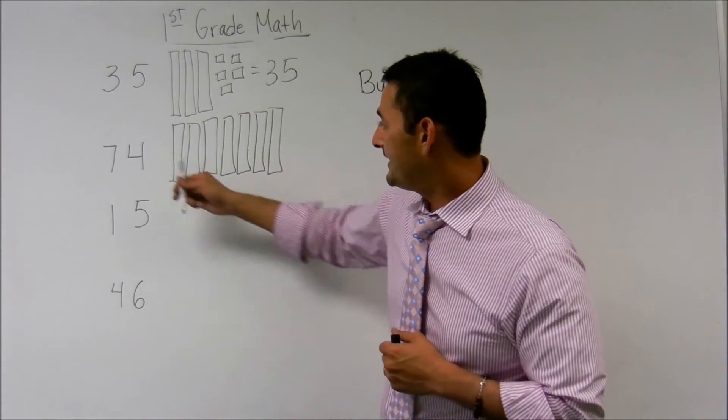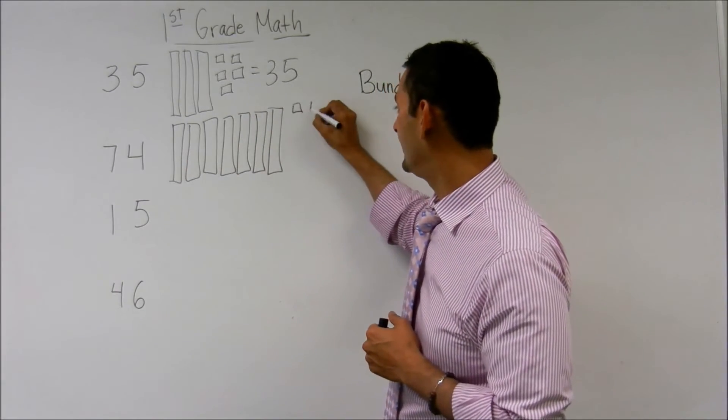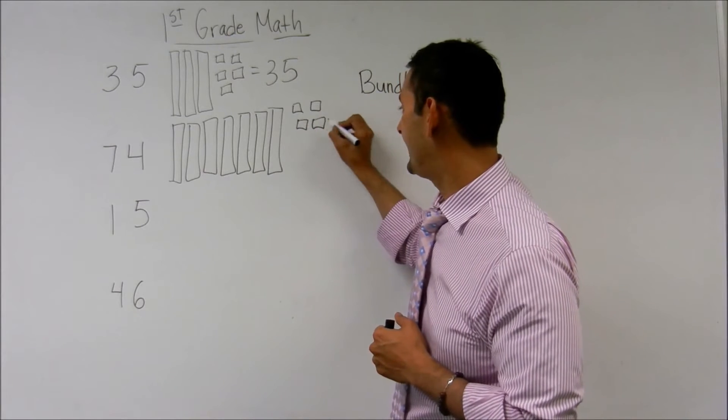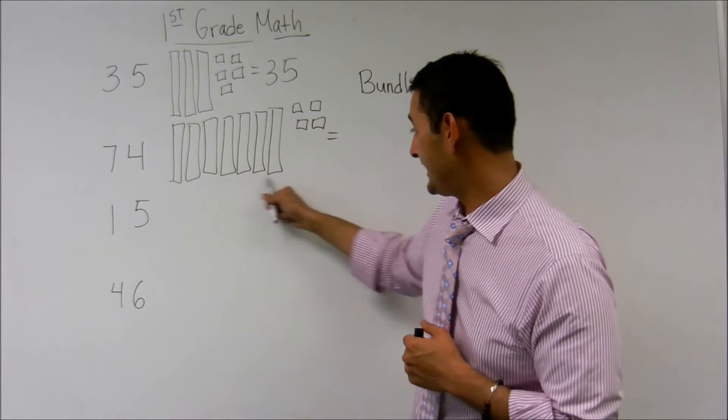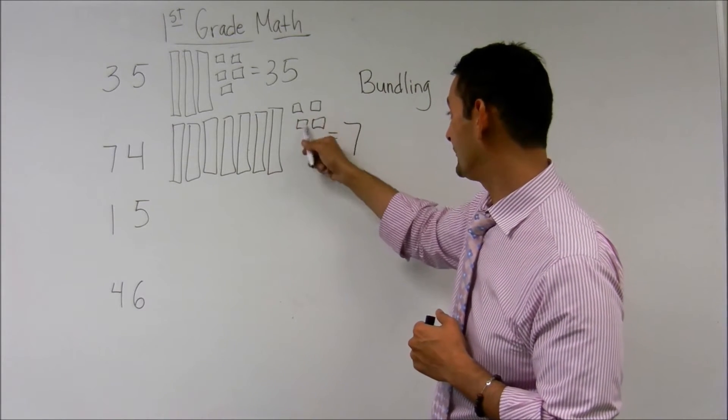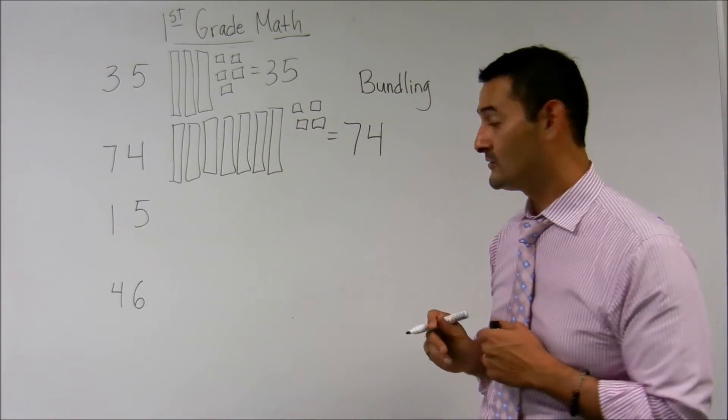We've bundled them together. And now I've got four ones. One, two, three, and four, which equals seven tenths. One, two, three, four ones, which equals seventy-four.